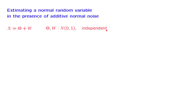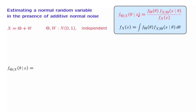According to the Bayesian program, inference about theta is essentially the calculation of the posterior distribution of theta, given that the observation capital X takes on a specific value little x. To calculate this posterior distribution, we invoke the appropriate form of Bayes rule. We have the prior of theta — it's a standard normal. Now we need to figure out the conditional distribution of x given theta.